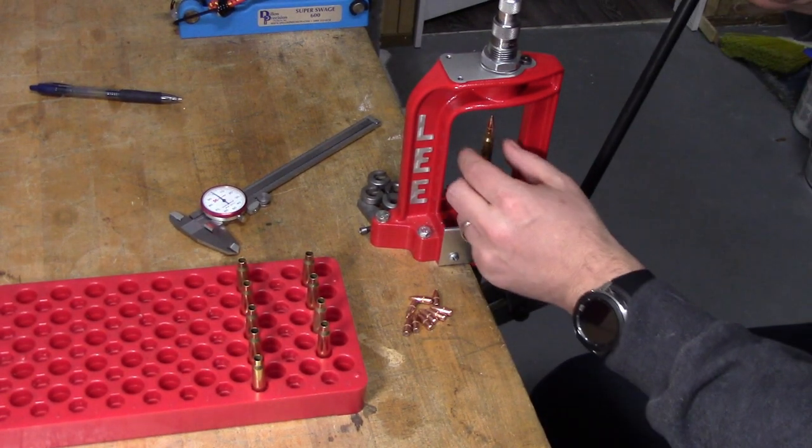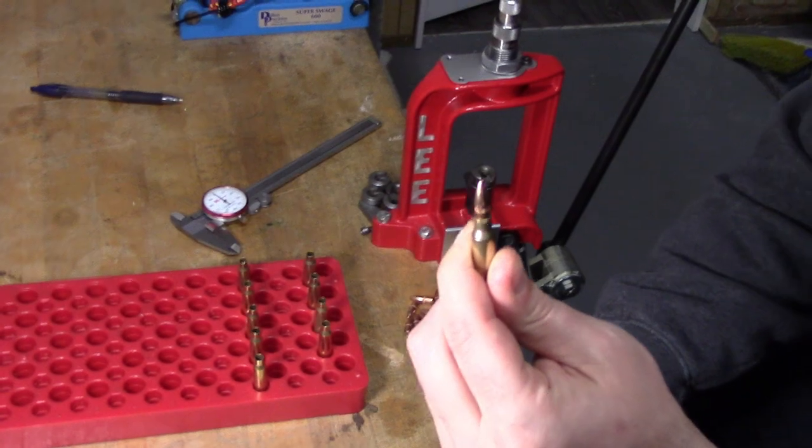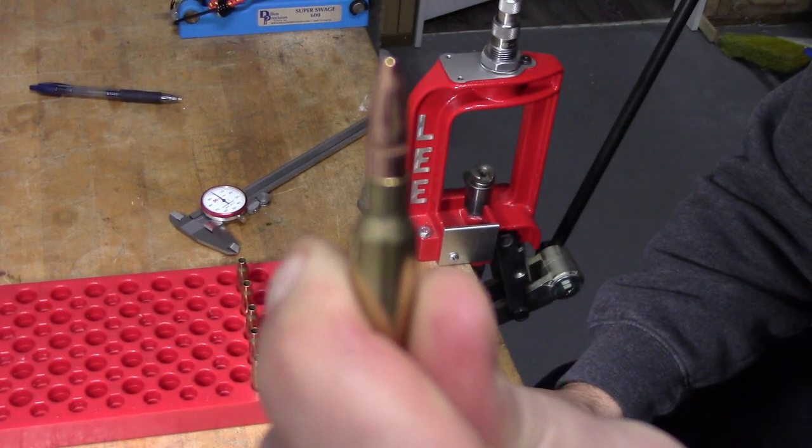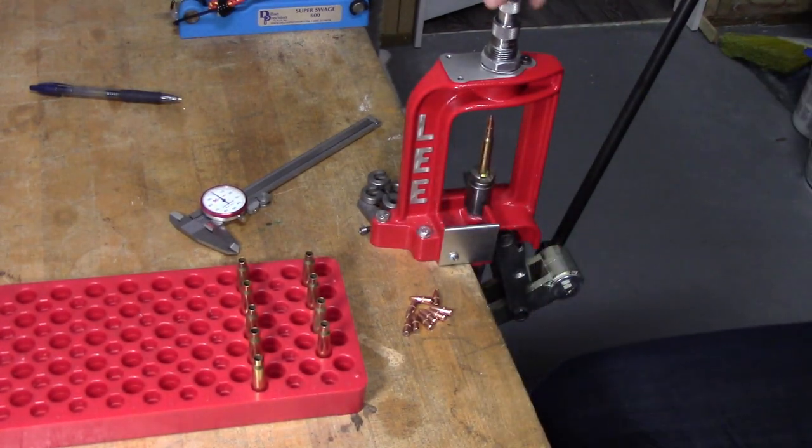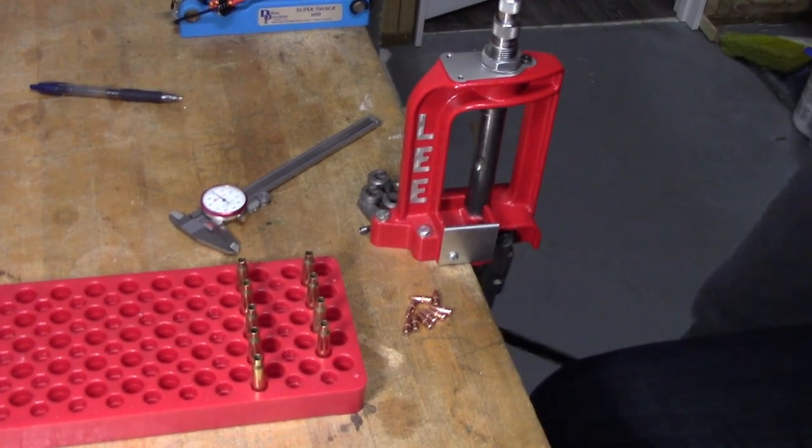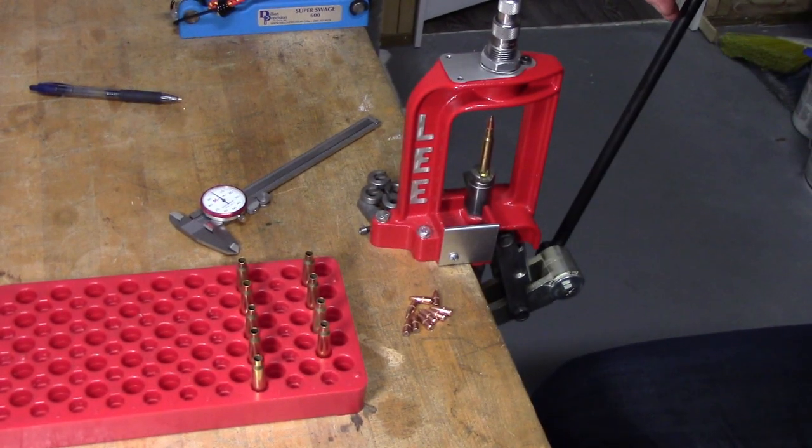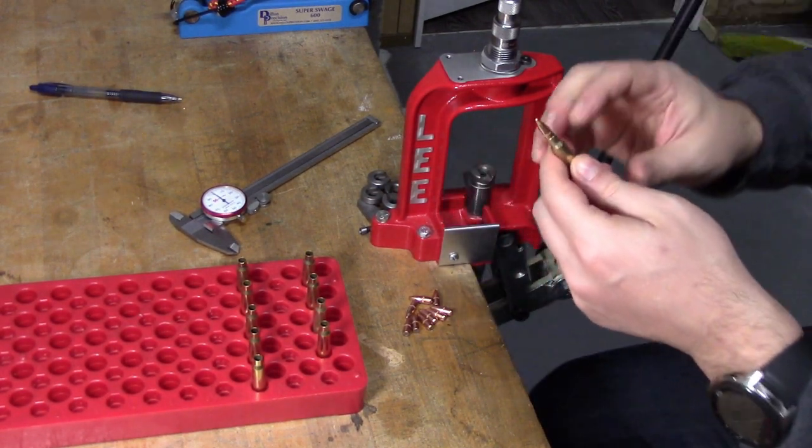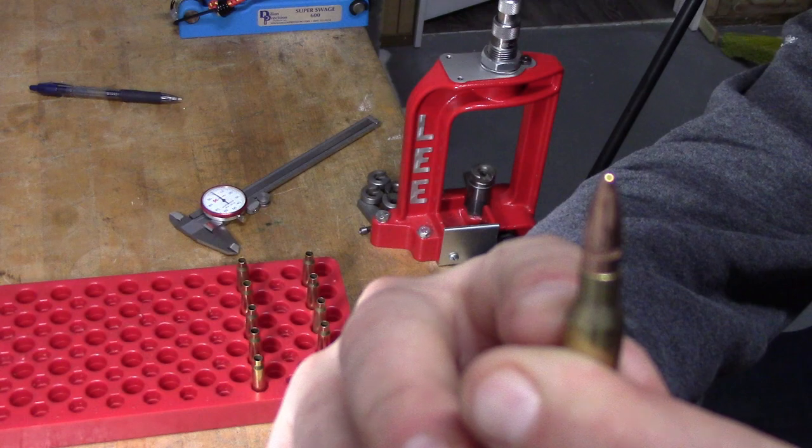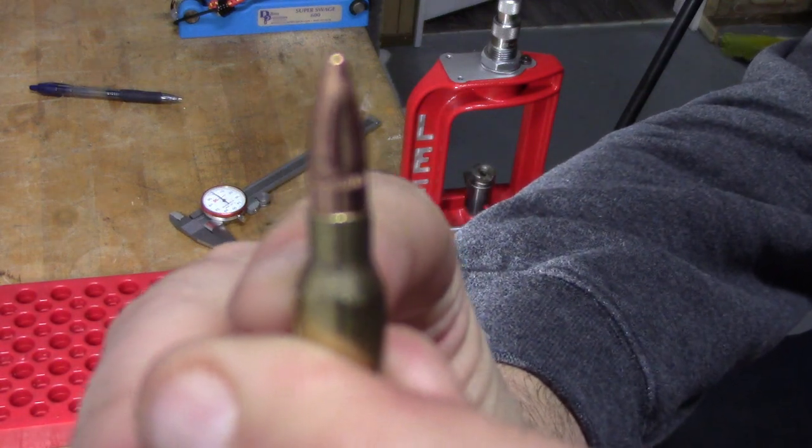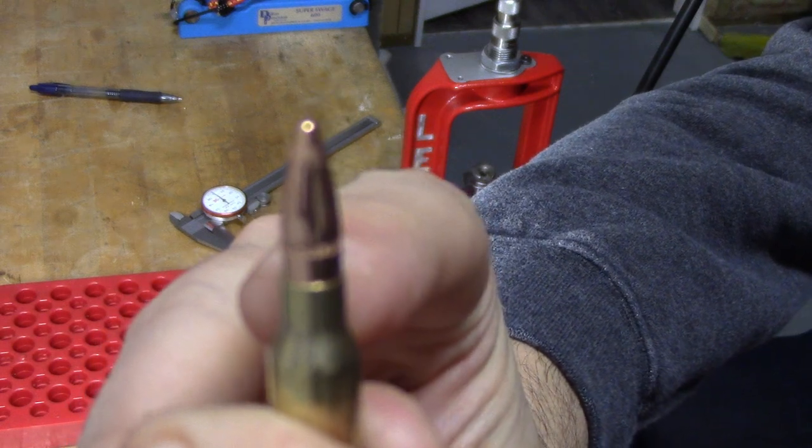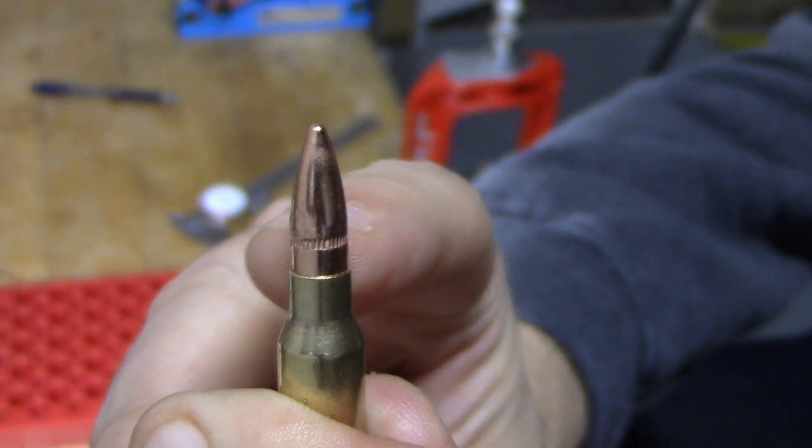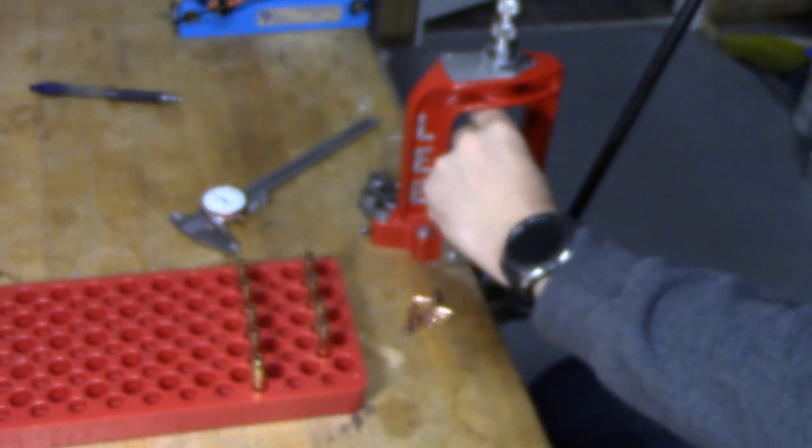Alright, so now you can see we have a bullet seated in the case, but we're way off from where we need to be, so we're going to continue to size down. We're getting closer. Now this bullet actually has a cannelure on it - you can see the crimp groove. 2.20 inches should give us the case mouth right around the cannelure, so I know we still have a ways to go.